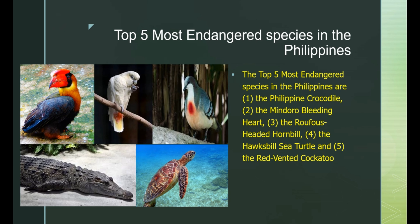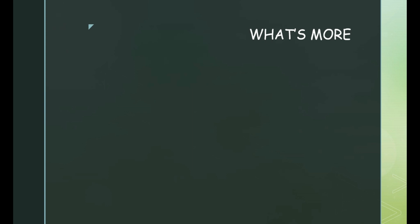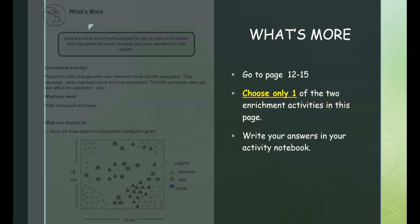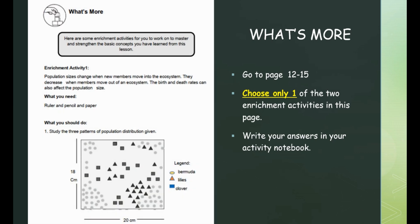Can you think of ways to prevent the extinction of endangered species in the Philippines? Let's apply what you've just learned about biodiversity. Go to page 12 to 15 of your modules. There are two enrichment activities that will help strengthen the basic concepts in this module. Choose only one of the two to answer. Write your answers in your activity notebook.